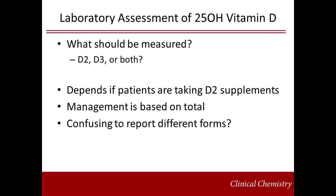One question many laboratorians will be asked is which form of vitamin D should be measured. Assuming that we want to measure someone's overall vitamin D status, it is important to consider whether we want to measure vitamin D2, vitamin D3, or both — referring to the 25-hydroxy forms. If you have patients taking vitamin D2 supplements, principally in the prescribed form, it is going to be important to identify vitamin D2 to detect the rare cases of toxicity. However, management of overall vitamin D status is based on total vitamin D levels, so it is certainly important to report at least the total. Another consideration is whether clinicians will appreciate the subtleties of the differences between reporting vitamin D2 and vitamin D3. It is useful to provide interpretive comments on reports to help users understand the results.